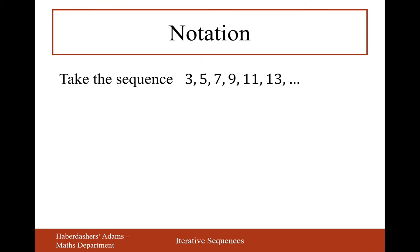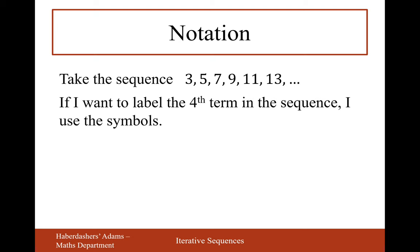Let's now move on to the notation part of iterative sequences. Take the sequence 3, 5, 7, 9, 11, and 13. If I want to label the fourth term in the sequence, I use the symbol x with a subscript 4. You've seen this kind of notation in chemistry, like H₂O where the little 2 is a subscript.